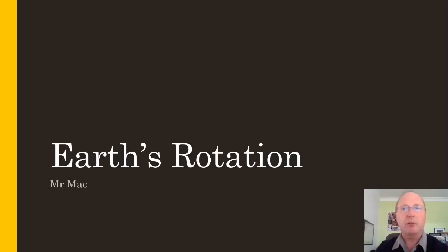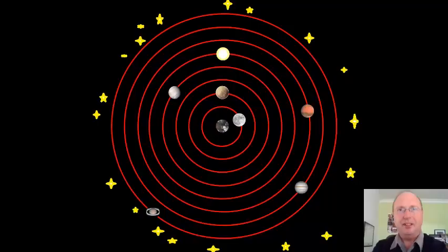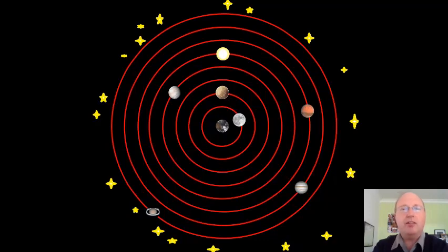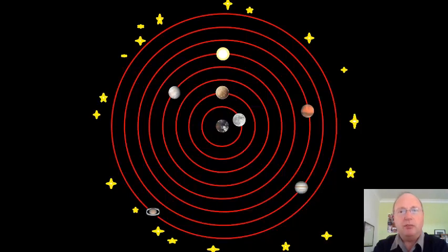Many years ago, people thought that we lived on a flat Earth, so they thought that the Sun, Moon, stars and planets went around the Earth. Even when people knew that the Earth was really the shape of a ball, most people continued to think that the Earth was the center of the universe and everything revolved around it — as you can see in this diagram with Earth at the center, the Moon revolving around the Earth, then Mercury and Venus and the other planets, with stars fixed in place at the outside.